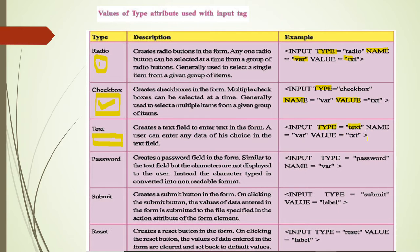Now coming to the password field. It looks the same as the text box, but the difference is that when we enter any data in the password field, whatever we type is shown with dots or star marks, hiding the characters. This is done to keep the information secret. That is why we will not give a value attribute in the password field — if we give a value, the characters lose their secrecy.